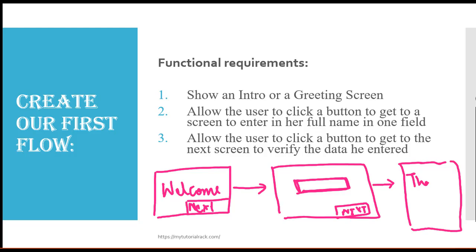This is how the flow should look like once we have achieved this requirement. We have to create a flow with three different screens. In the first screen, you will see a welcome message. In the next screen, you will have a box to capture your name. And then in the last screen, whatever name you entered in the previous screen should appear.